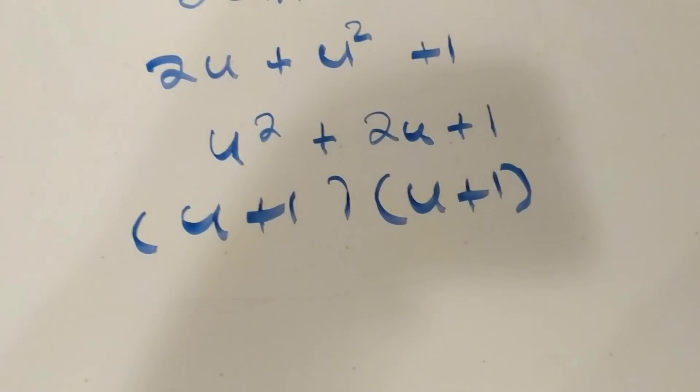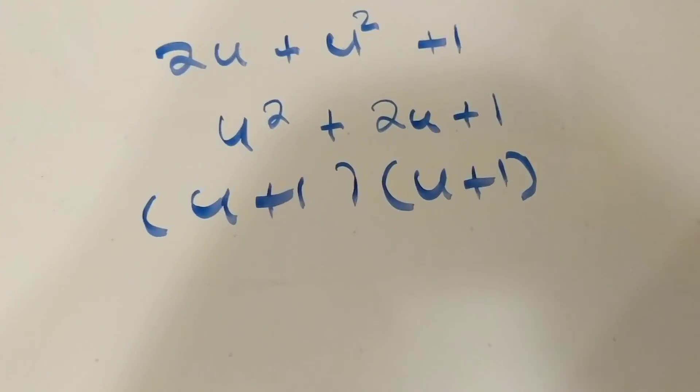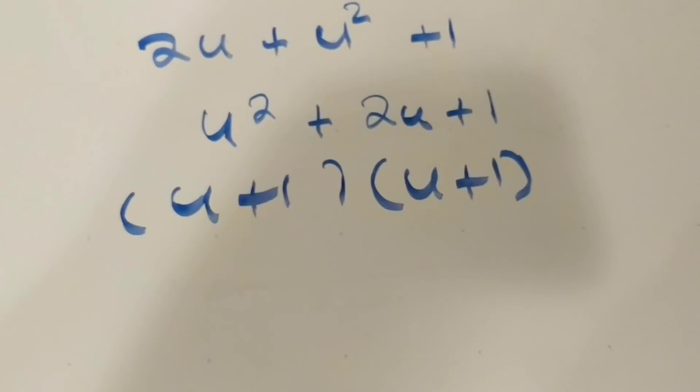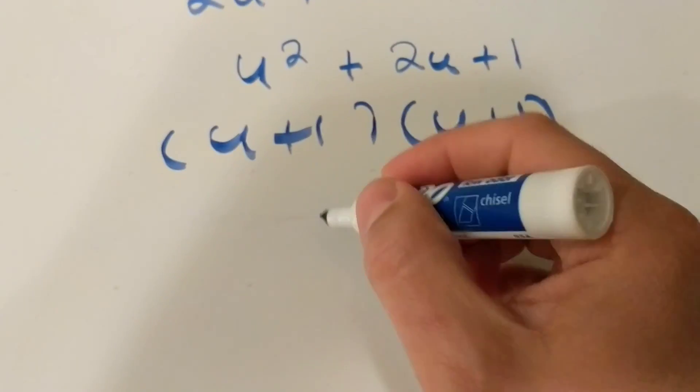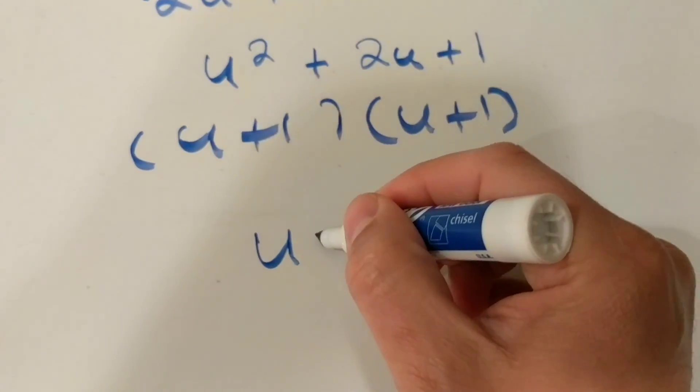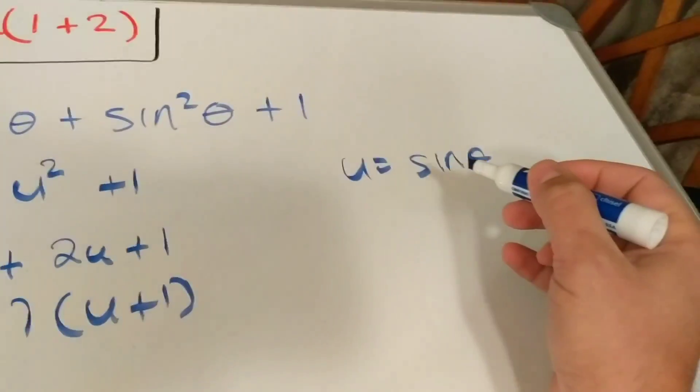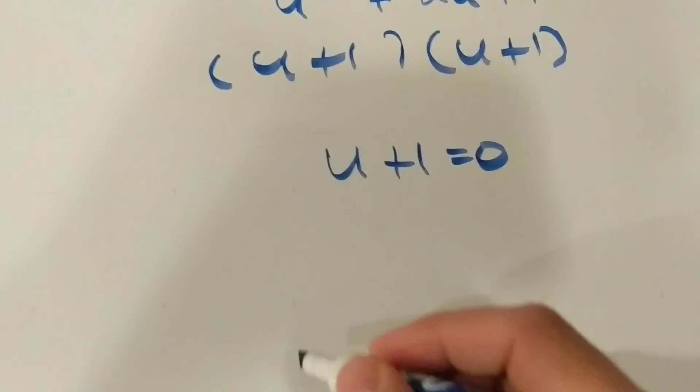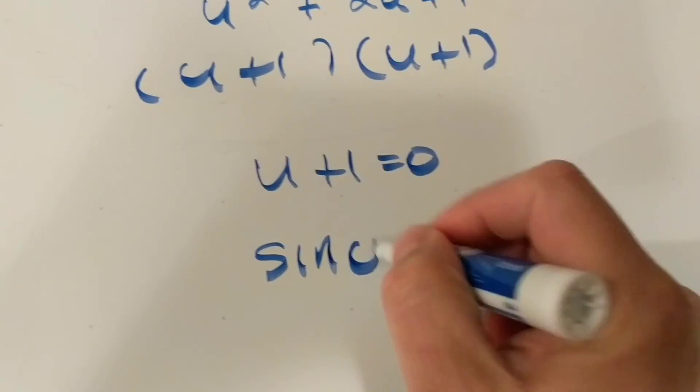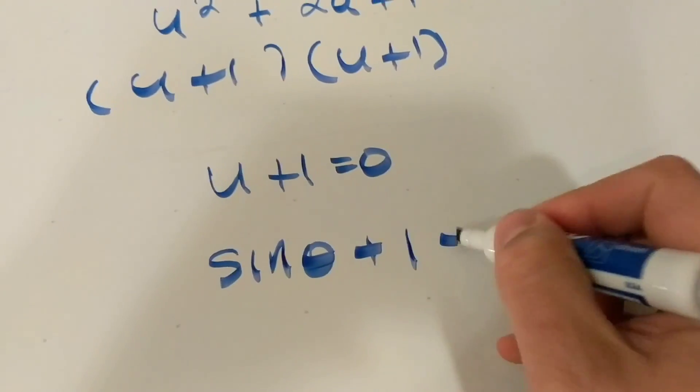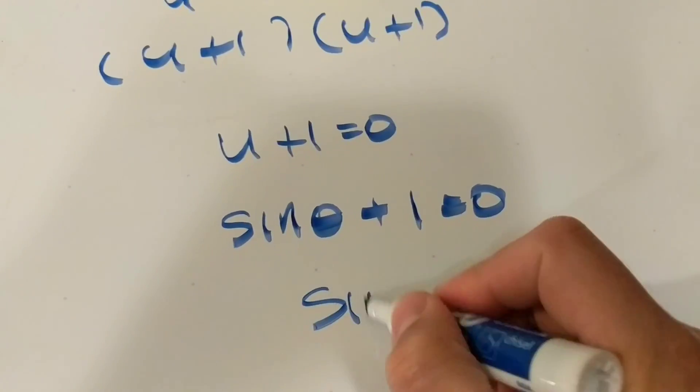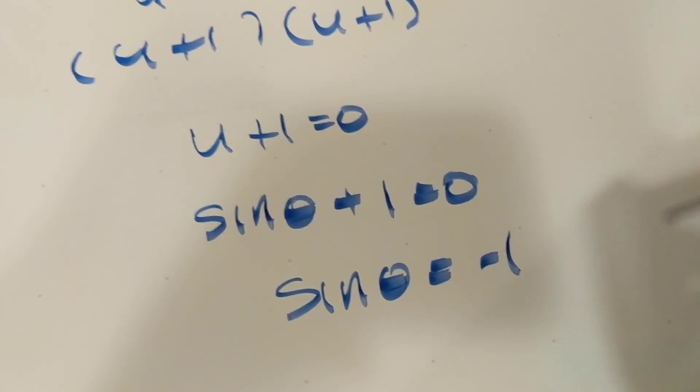And if I was looking for zero as an equation, I could now set these equal to zero and solve. But before I solved, if I just did u plus 1 equals zero, I would want to be sure to take that u, sine theta, and plug that back into the equation so that eventually I can see that sine of theta is equal to negative 1.